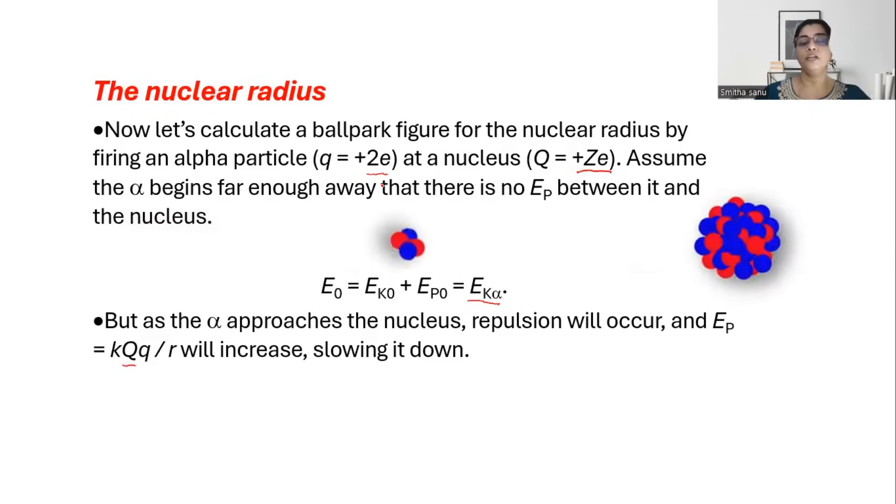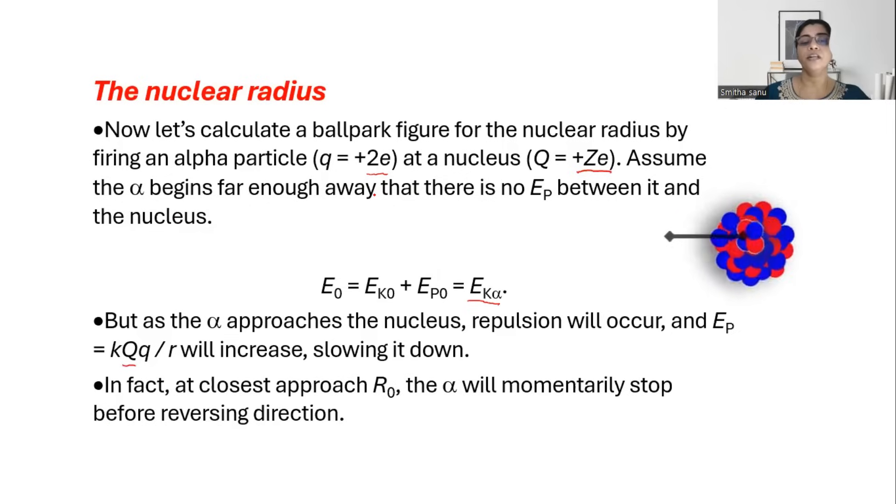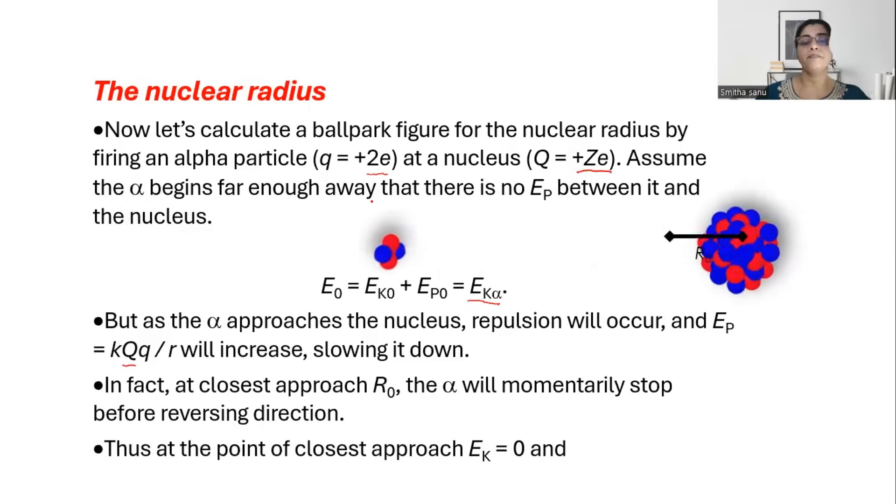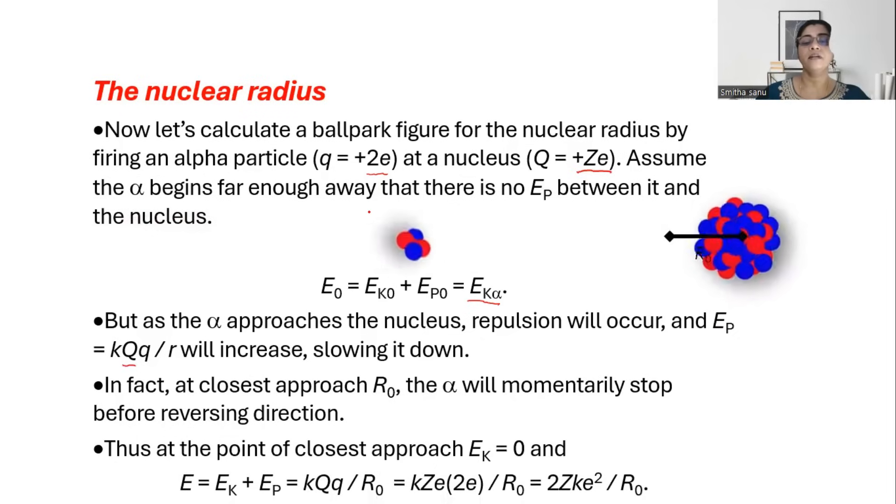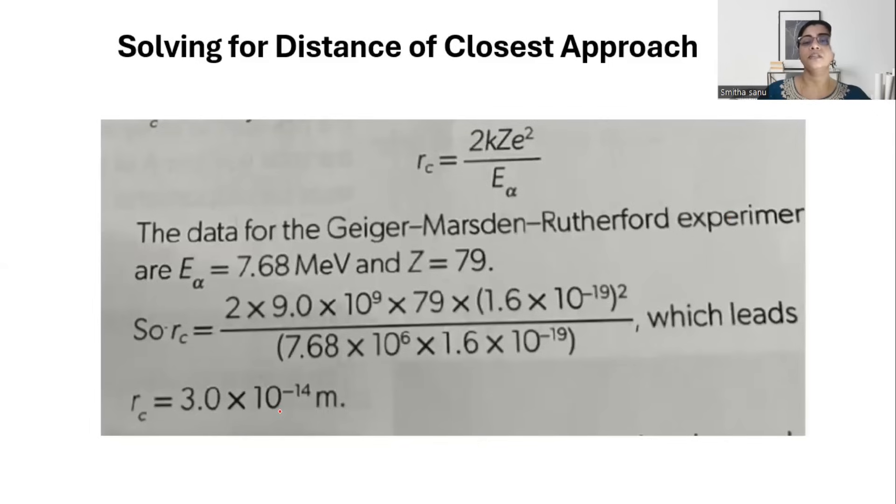If you substitute all of the equations in the electrical potential energy equation, we have that ZE is the charge of capital Q, 2E is the charge of small q. So we have the equation 2ZKE squared over R0 or R, which is the distance of closest approach. This gives you an important relation that energy and the radius of an atom are inversely related. As the radius increases, the energy of alpha particles reduces.